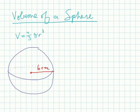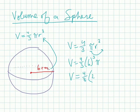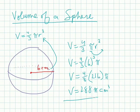The volume of a sphere, very similarly, we're just going to substitute our radius of 6 into the formula. The volume formula is (4/3)πr³ — pi r cubed, since we're talking about volume. So volume equals (4/3) times 6 cubed. 6 cubed is 216, and (4/3) times 216 is 288. So the volume is 288π centimeters cubed.